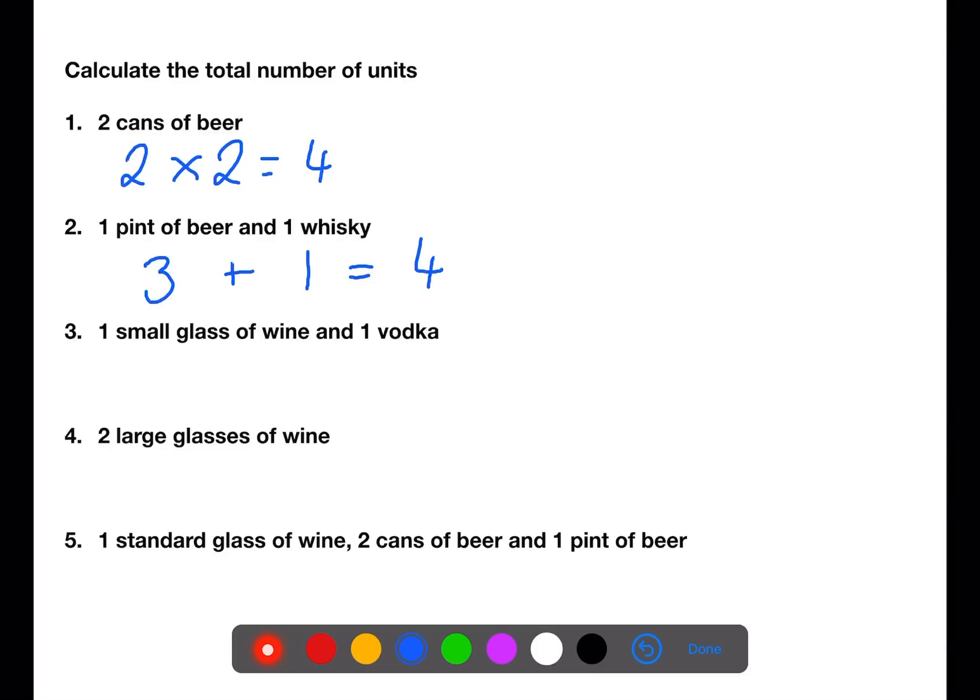In the third example we have a small glass of wine at 1.5 units and one vodka which is 1 unit. So 2.5 units.